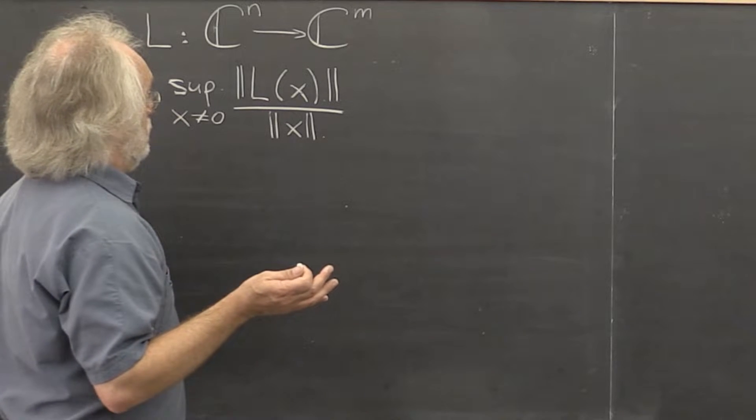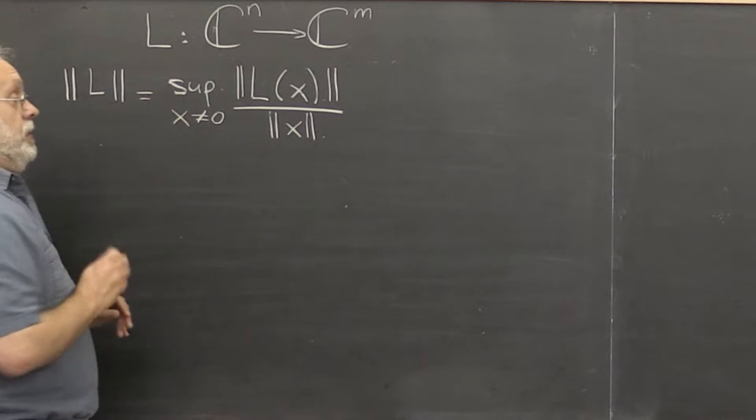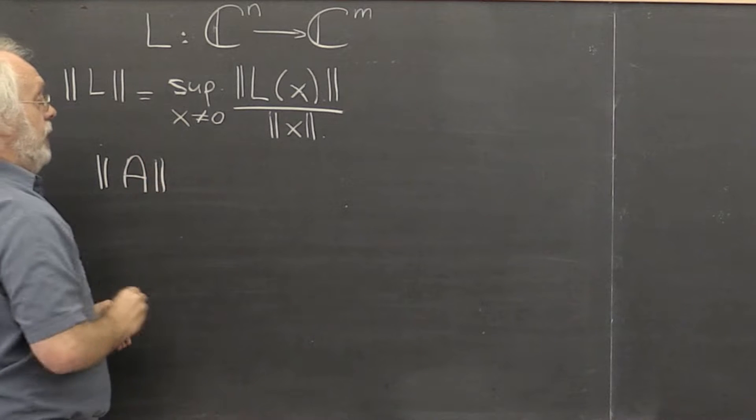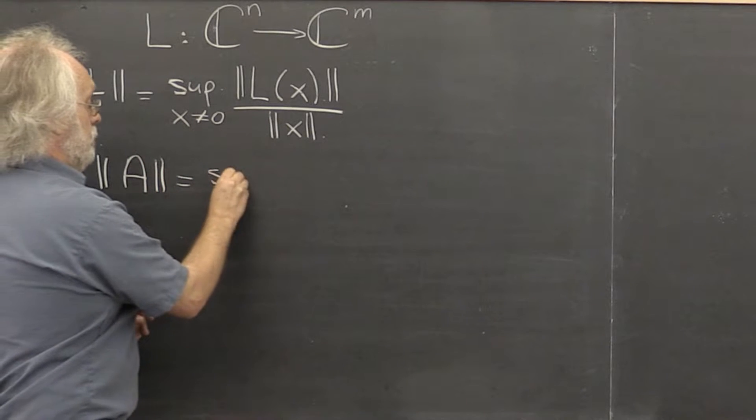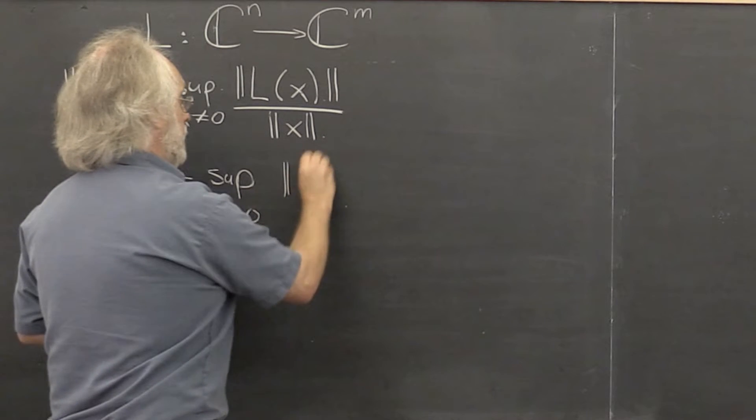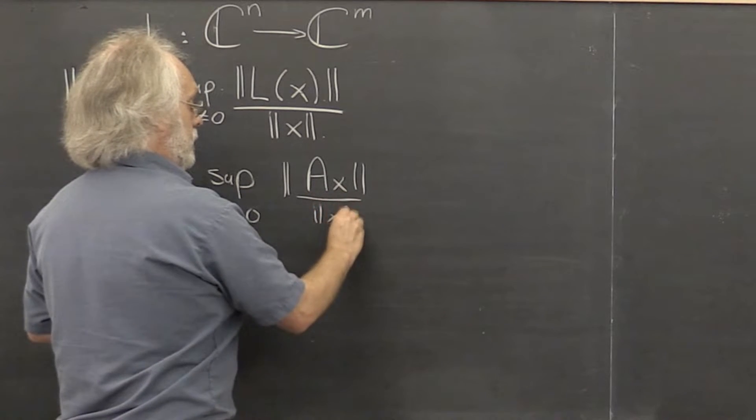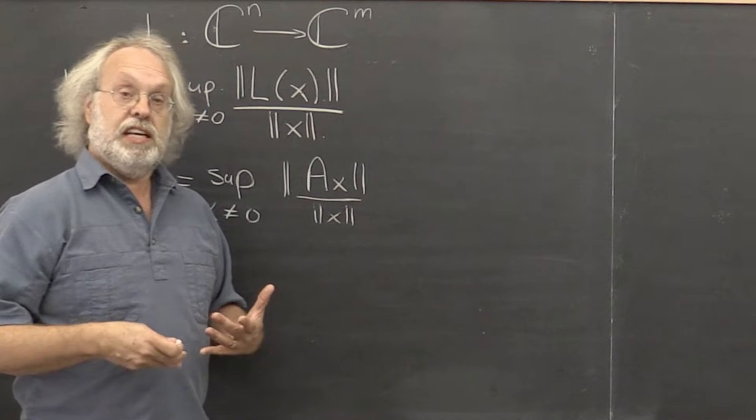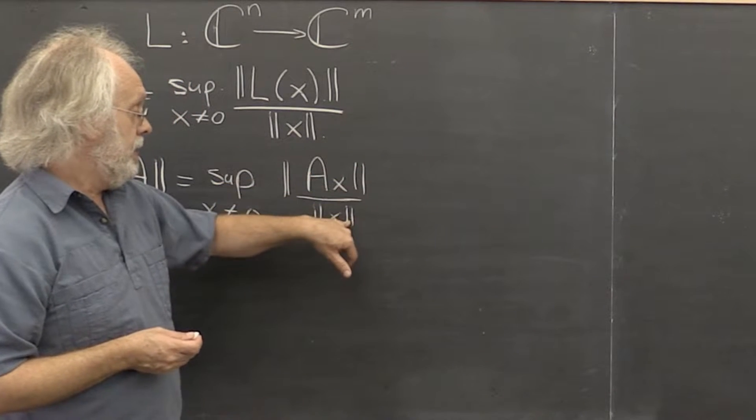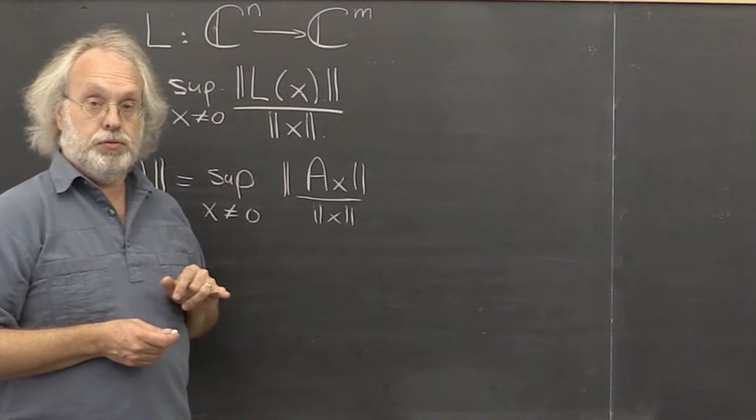What else? Well, if we then have a matrix A that represents the linear transformation, then we could define the norm of A to be the supremum over all x not equal to zero of ||Ax|| / ||x||. And norms like that are known as induced matrix norms because they are induced by the vector norms that you pick for the input and for the output.